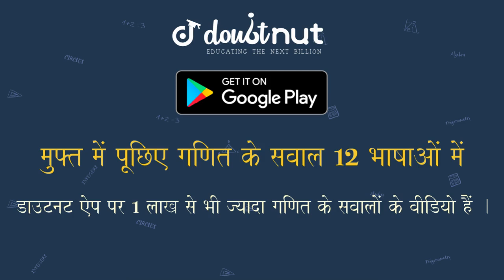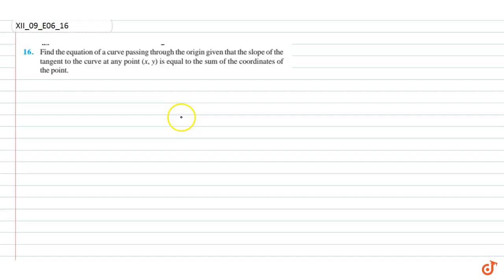In this question we have to find the differential equation of a curve, and it is given that the slope of the tangent to the curve at point (x, y) is equal to the sum of coordinates. This means dy/dx is equal to x plus y.